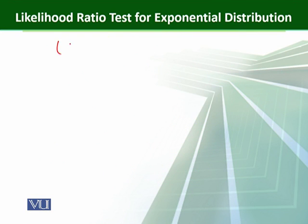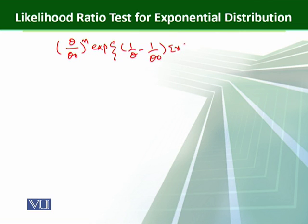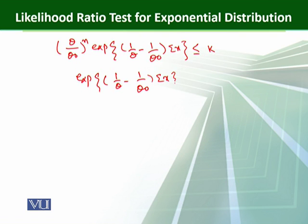We now write down the rejection region: (theta/theta naught)^n * exp((1/theta - 1/theta naught) * sum(x)) less than or equal to k. Taking the constant term to the other side, we get exp((1/theta - 1/theta naught) * sum(x)) less than or equal to k * (theta naught/theta)^n.